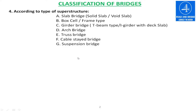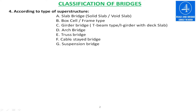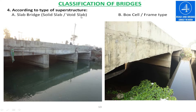According to the type of superstructures, the bridge can be classified into different categories: slab bridge, box girder, girder bridge, arch bridge, truss bridge, cable-stayed bridge, and suspension bridge. In case of slab bridge, it can be classified into two categories: solid slab and voided slab. Voided slab may also be PSC or RCC.